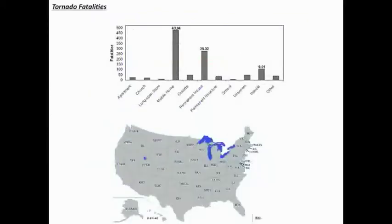One interesting analysis is looking at where people were when they died from tornadoes. In this figure, you can see that 43.94% of people killed in tornadoes are in mobile homes, about 25% are in permanent homes, and about 10% are in vehicles. Those are the three largest categories, with mobile homes by far being number one.